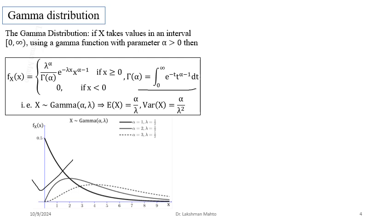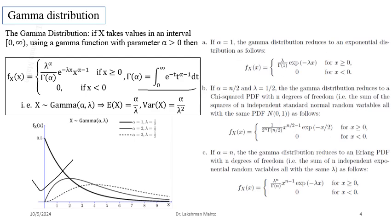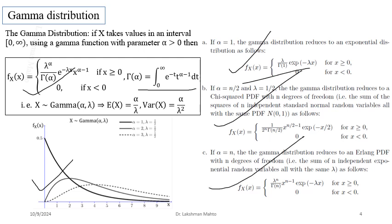Comparing with geometric and exponential distributions: geometric has mean 1/p and variance (1−p)/p²; exponential has mean 1/λ and variance 1/λ². Gamma introduces the factor α. When α = 1, Γ(1) = 0! = 1, so the Gamma distribution reduces to the exponential distribution λe^(−λx).